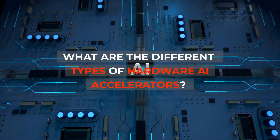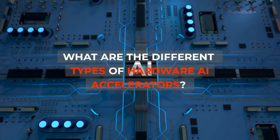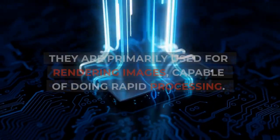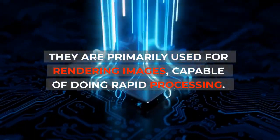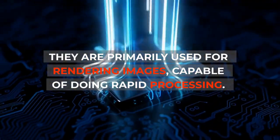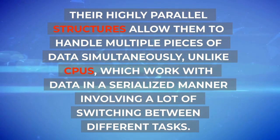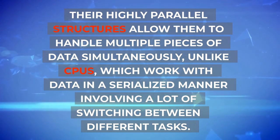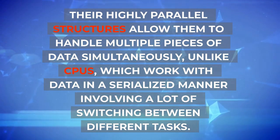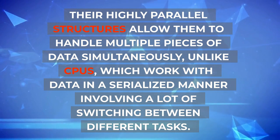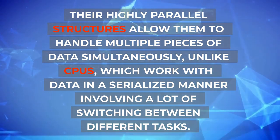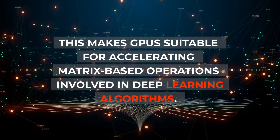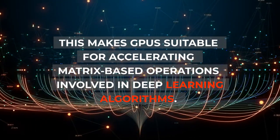Graphics Processing Units (GPUs) are primarily used for rendering images and are capable of rapid processing. Their highly parallel structures allow them to handle multiple pieces of data simultaneously, unlike CPUs which work with data in a serialized manner involving a lot of switching between different tasks. This makes GPUs suitable for accelerating matrix-based operations involved in deep learning algorithms.